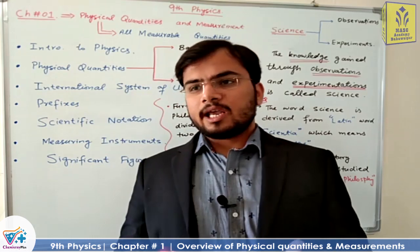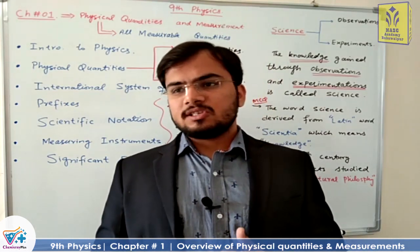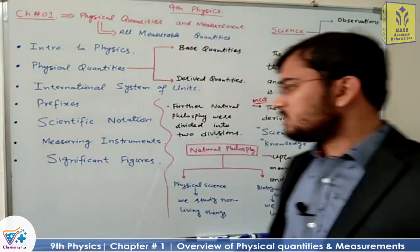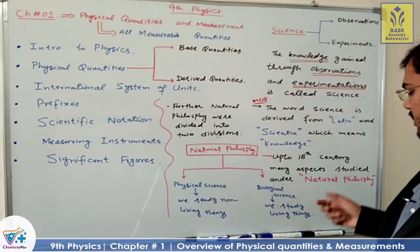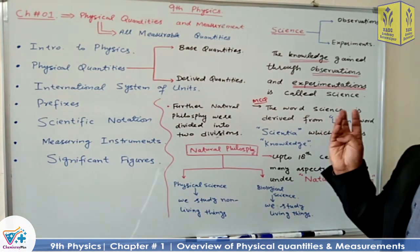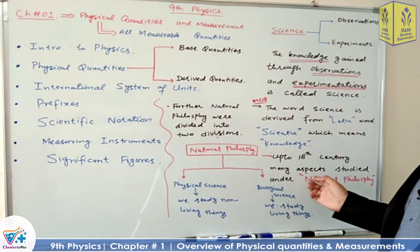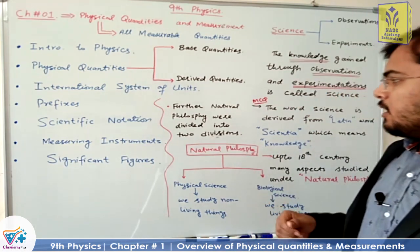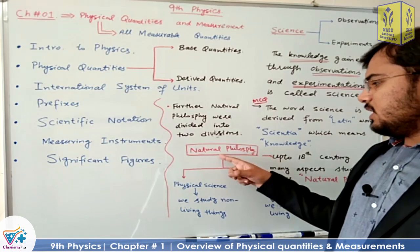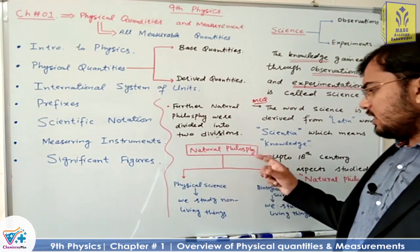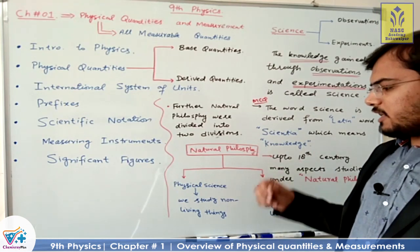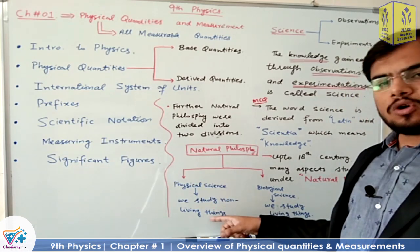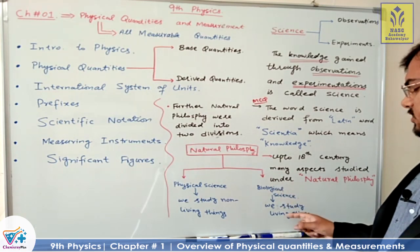Because knowledge expanded so much, it was categorized into different branches. Natural philosophy was divided into two divisions: one is physical science and the other is biological science. In physical science, we study non-living things. In biological science, we study living things — 'bio' means life. So living things are studied in biological sciences.